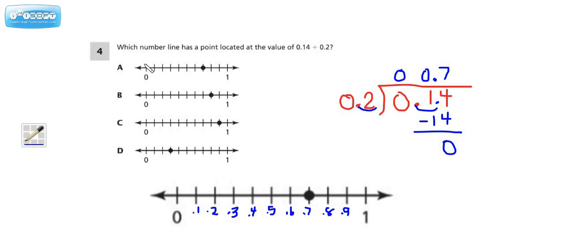So let's see if that's choice A. This would be 1 tenth, 2 tenths, 3 tenths, 4 tenths, 5 tenths, 6 tenths, 7 tenths. So this looks like it would be it. We're going to come back and just make sure that the others are wrong.